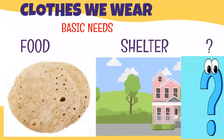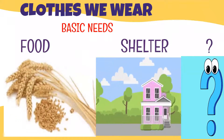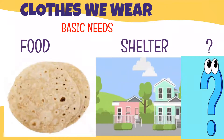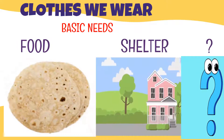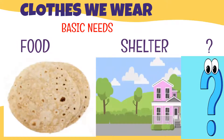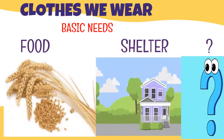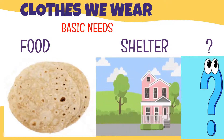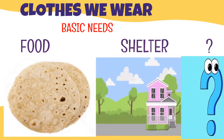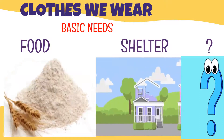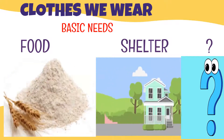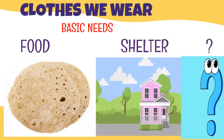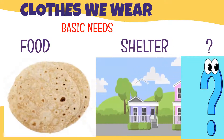There are three basic needs of human beings to live a happy and comfortable life. Do you know what they are? Yes, of course — food. Without food we cannot survive. The second one is shelter. It protects us from changing weather conditions and many more. The third one is clothes.